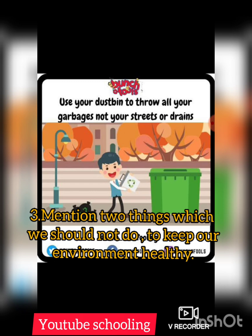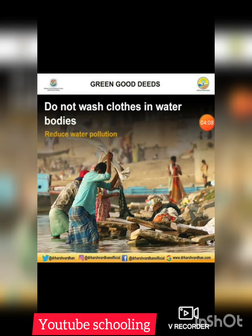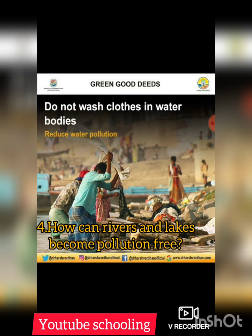Question number three: mention two things which we should not do to keep our environment healthy. Answer: we should not cut down trees. We should always throw waste in dustbins and not on roads or in water bodies. We should not waste electricity and water.